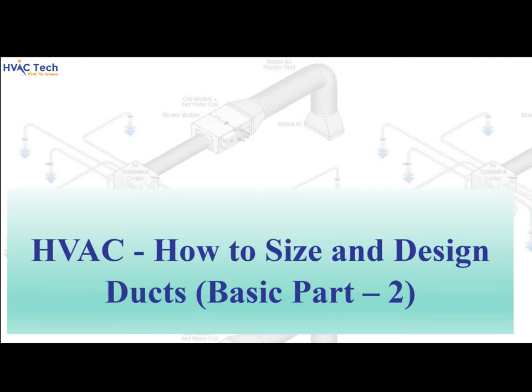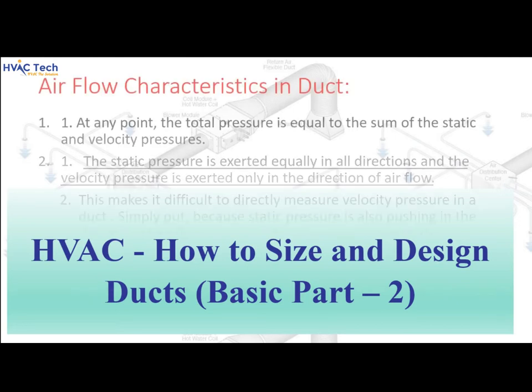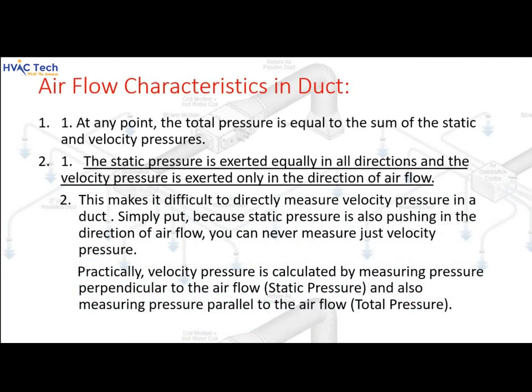HVAC: how to size and design ducts, basic part 2. Airflow characteristics in ducts: at any point, the total pressure is equal to the sum of the static and velocity pressures. Static pressure is exerted equally in all directions, while velocity pressure is exerted only in the direction of airflow. This makes it difficult to directly measure velocity pressure in a duct, because static pressure is also pushing in the direction of airflow.